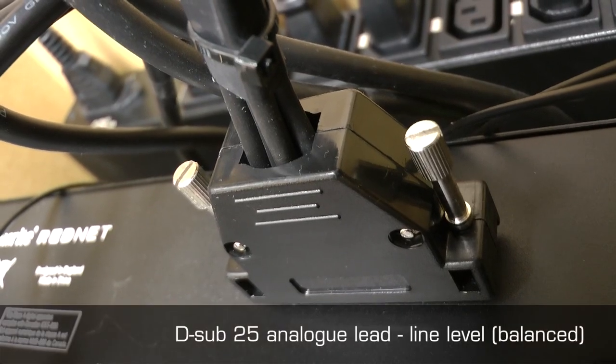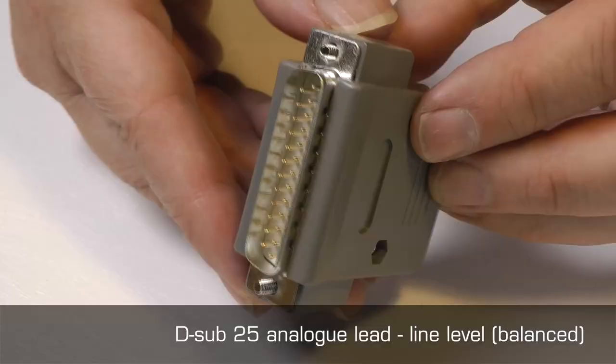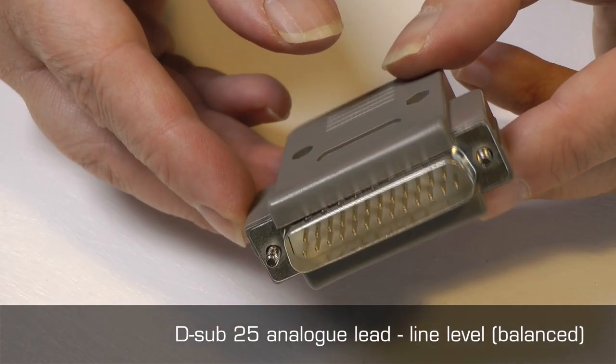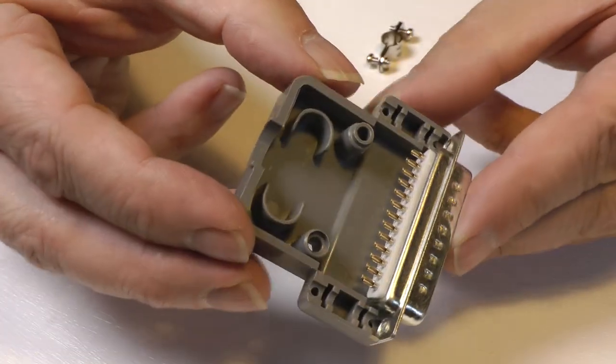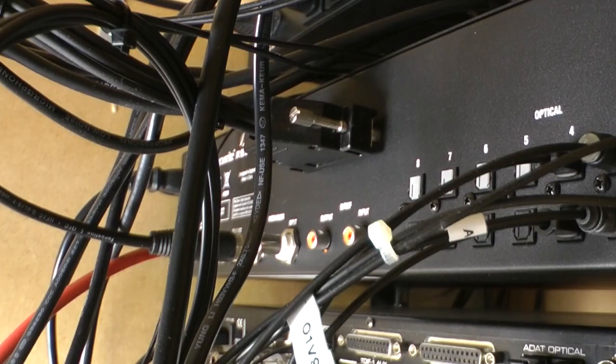And finally, the D-sub-25 can be used for analog line-level electrical connections. Balanced, of course, uses the D-sub-25 connector at both ends and is generally used for installation looms.